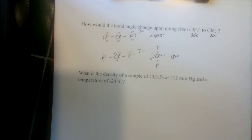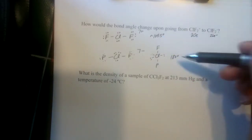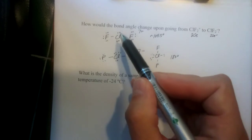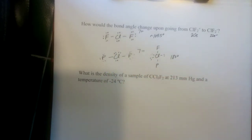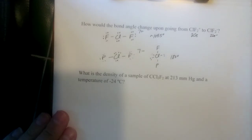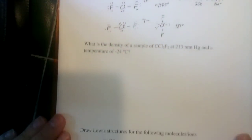So bond angle would change from 109.5 to 180, right? As we move that third lone pair in, that's going to separate the fluorines out into that different geometry.